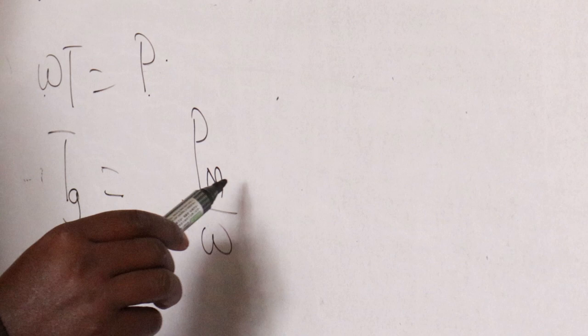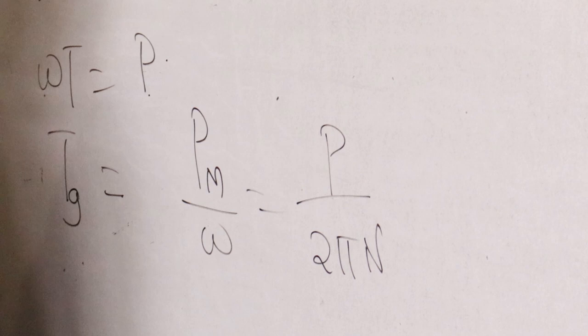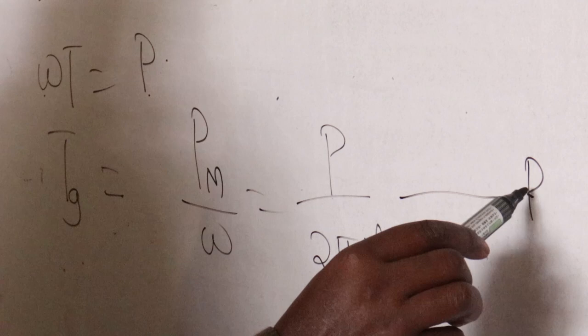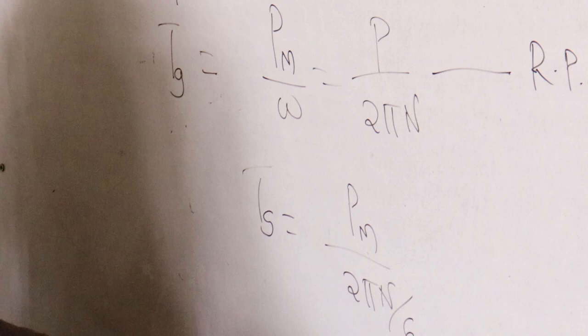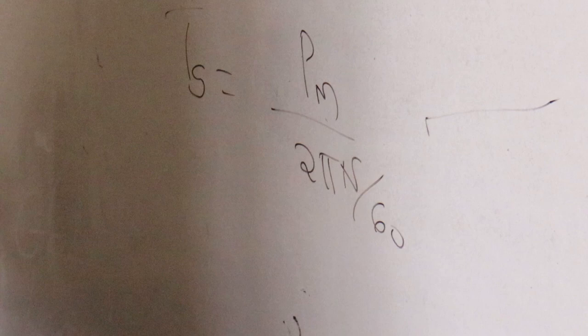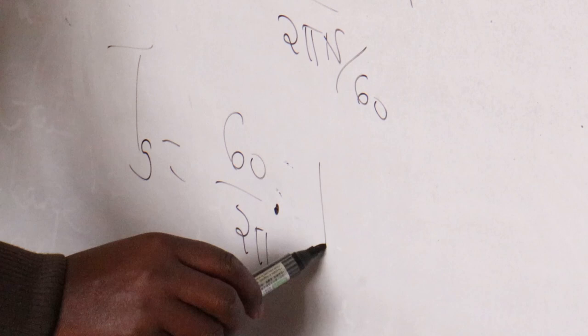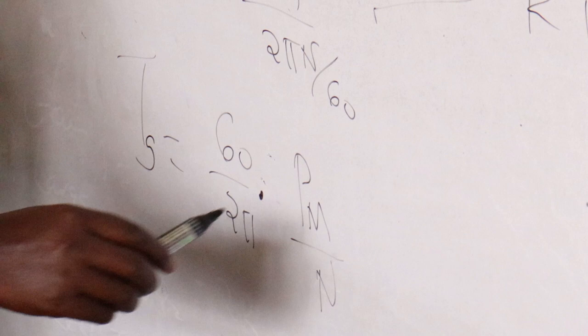Omega is 2 pi N. This is when you're working in RPS. But you always work in RPM, and therefore you can say Tg equals Pm times 2 pi N divided by 60. If you rearrange this, Tg equals 60 over 2 pi times Pm over N, which simplifies to 9.55 Pm over N. That is the formula for getting the torque developed.